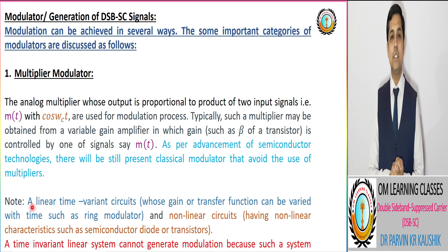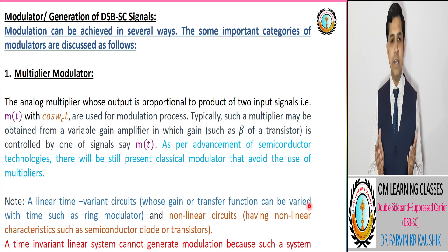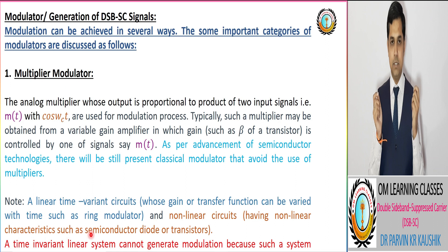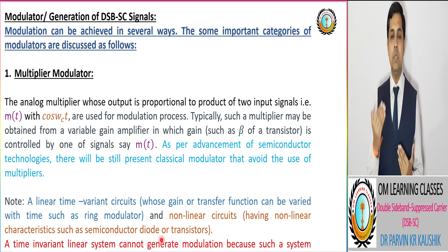The first important thing is that a linear time-variant circuit whose gain or transfer function can be varied with time — the best example is your ring modulator — and a non-linear circuit that has non-linear characteristics, such as a semiconductor diode or transistor. Both can be utilized for the modulation process of DSB-SC.